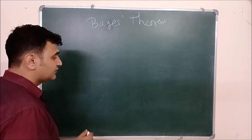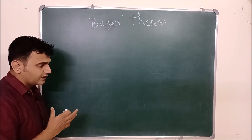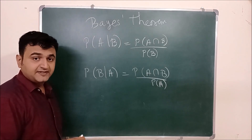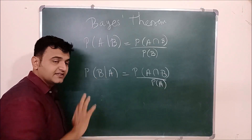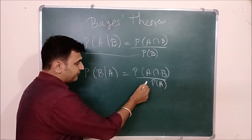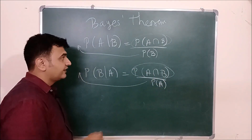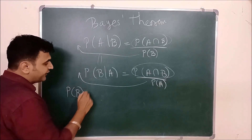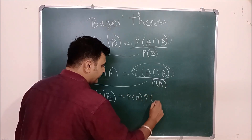Instead of stating the theorem directly, let me give you the basic case and then we'll go for the general case. Suppose you have two events A and B from a sample space S. The definition of P(A|B) and P(B|A) are given. From these, we can cross-multiply: probability of B times probability of A given B equals probability of A times probability of B given A.